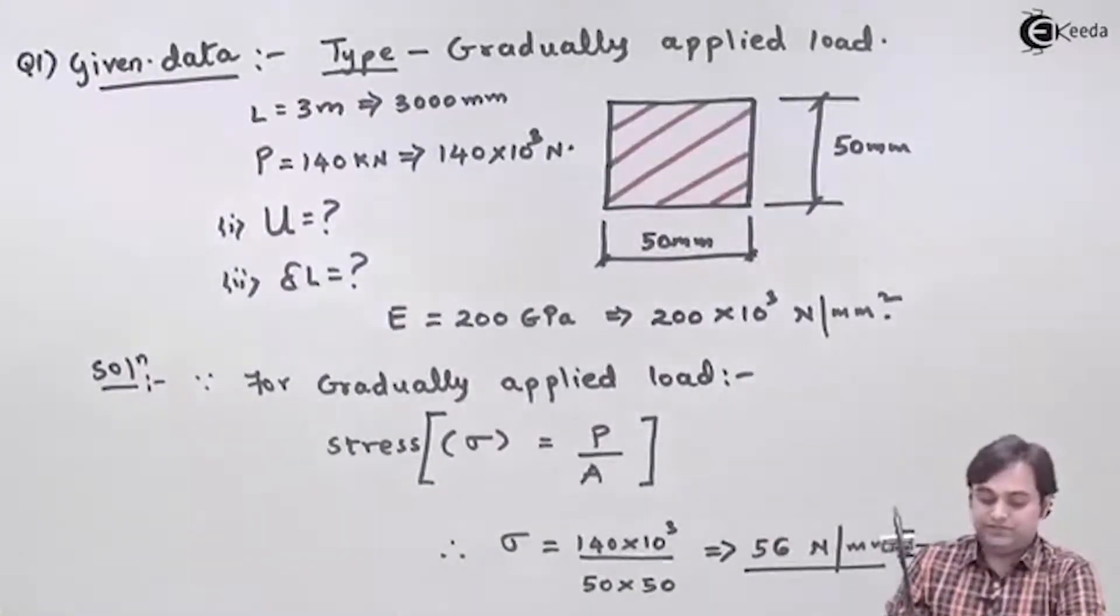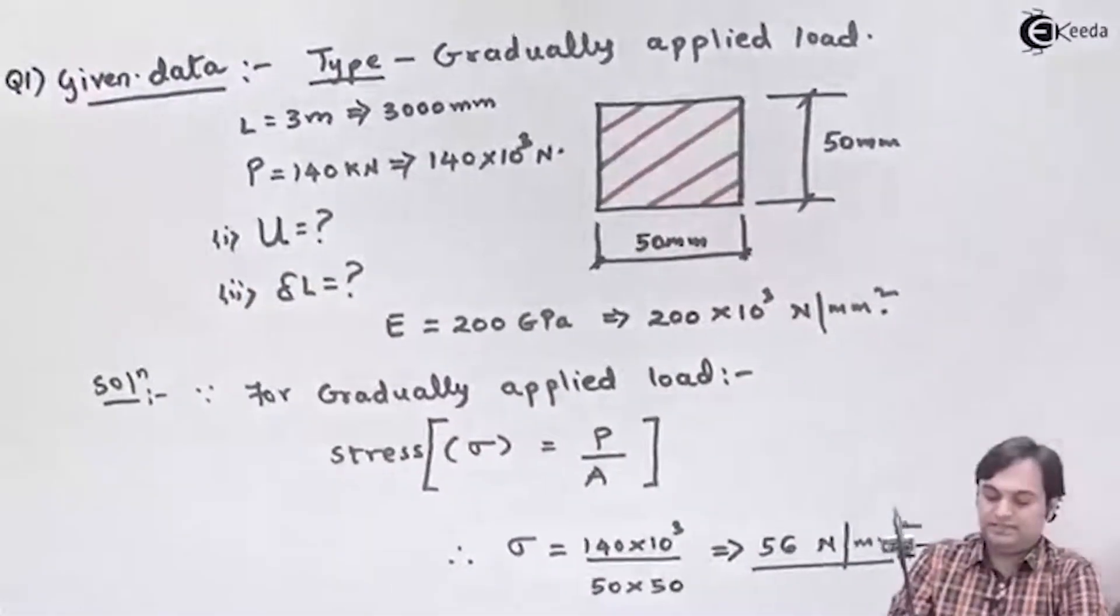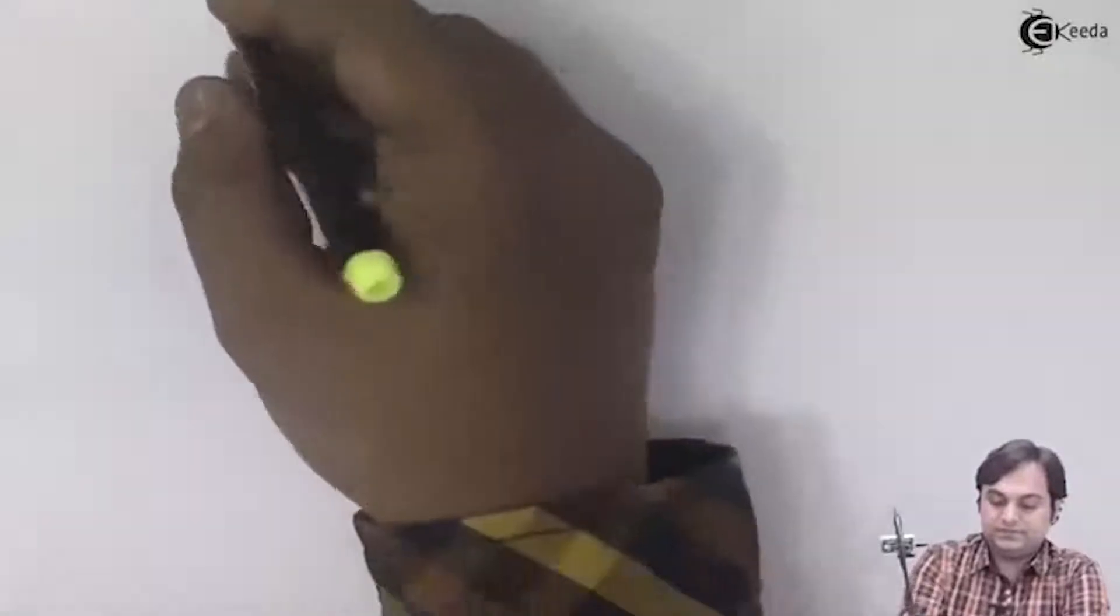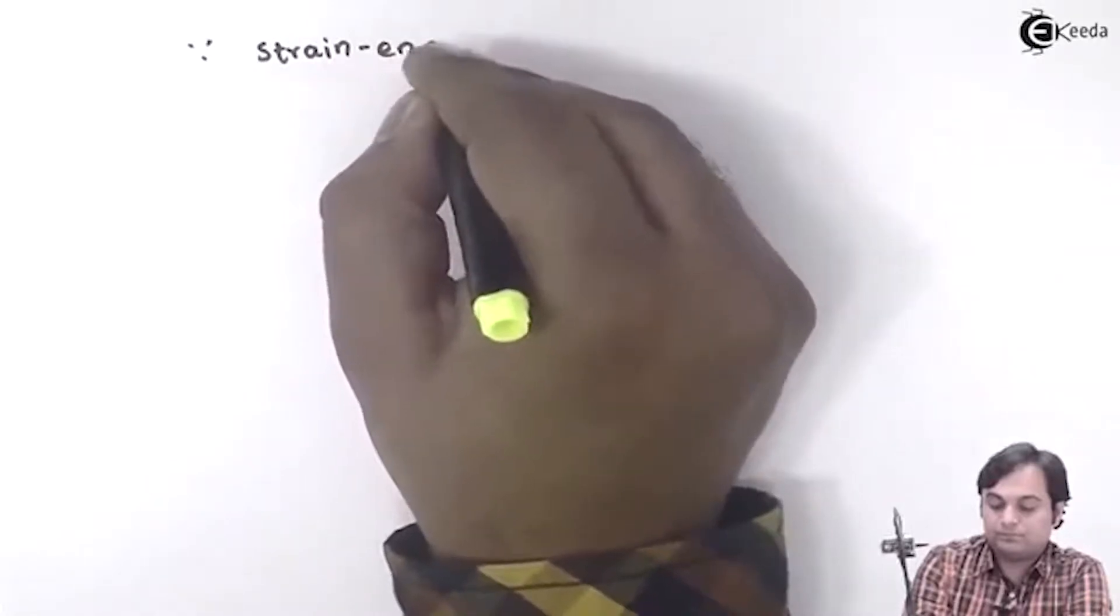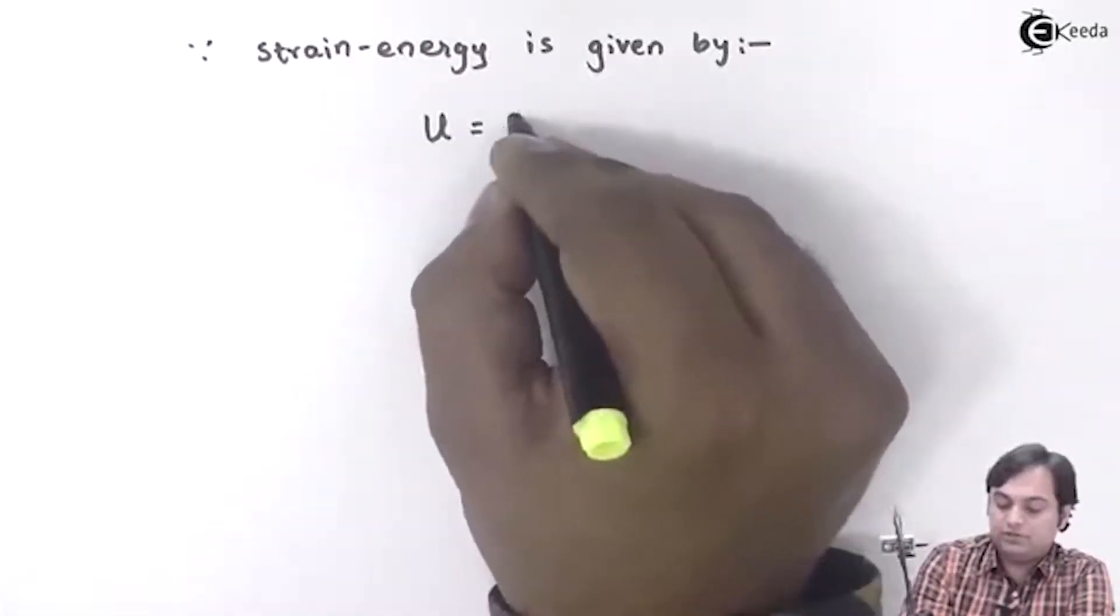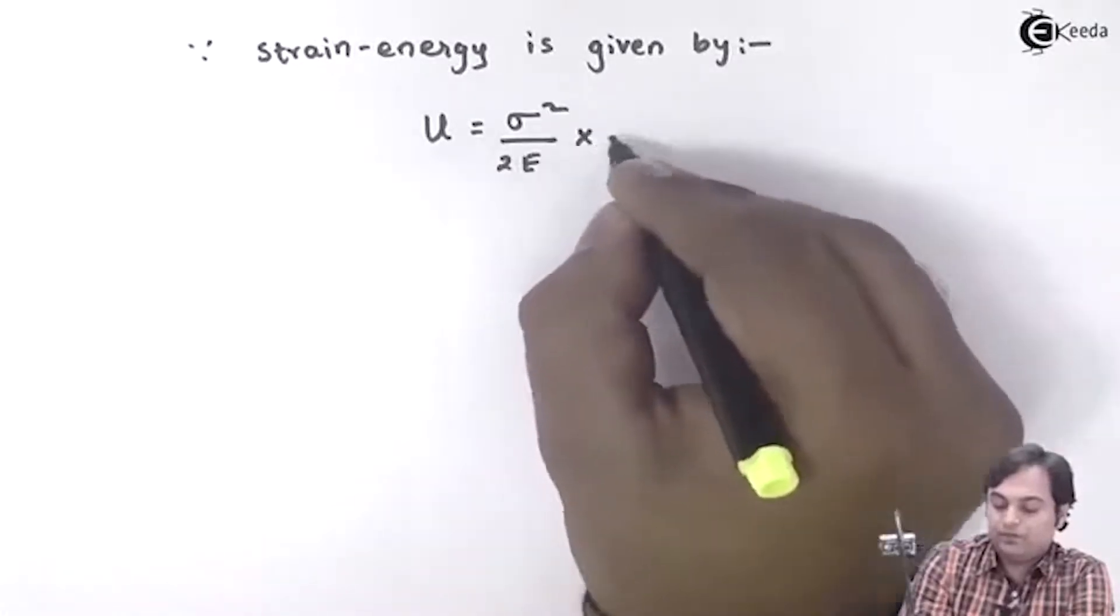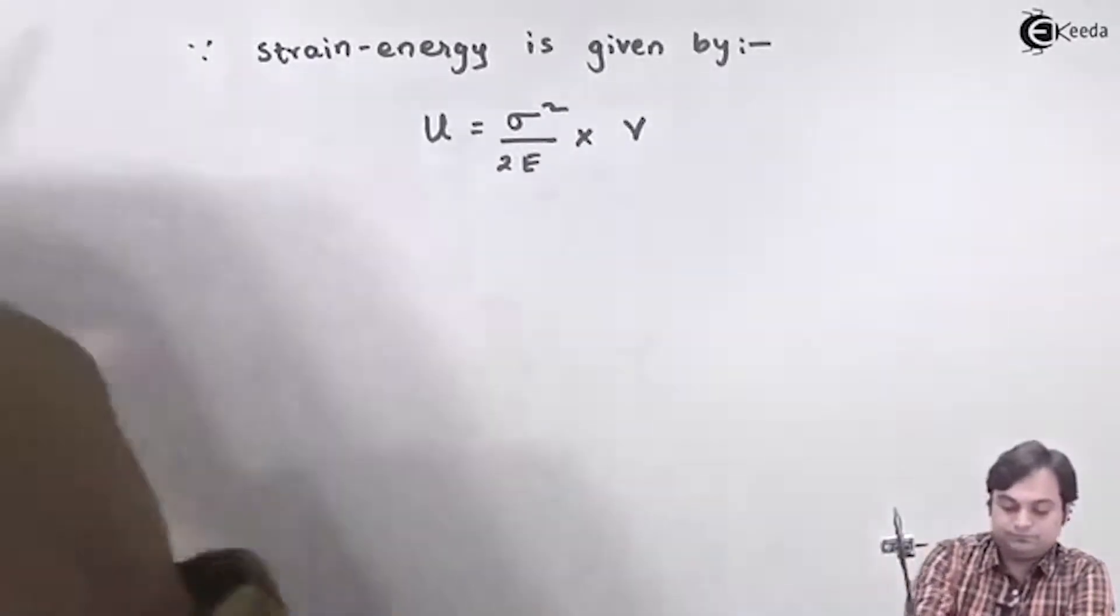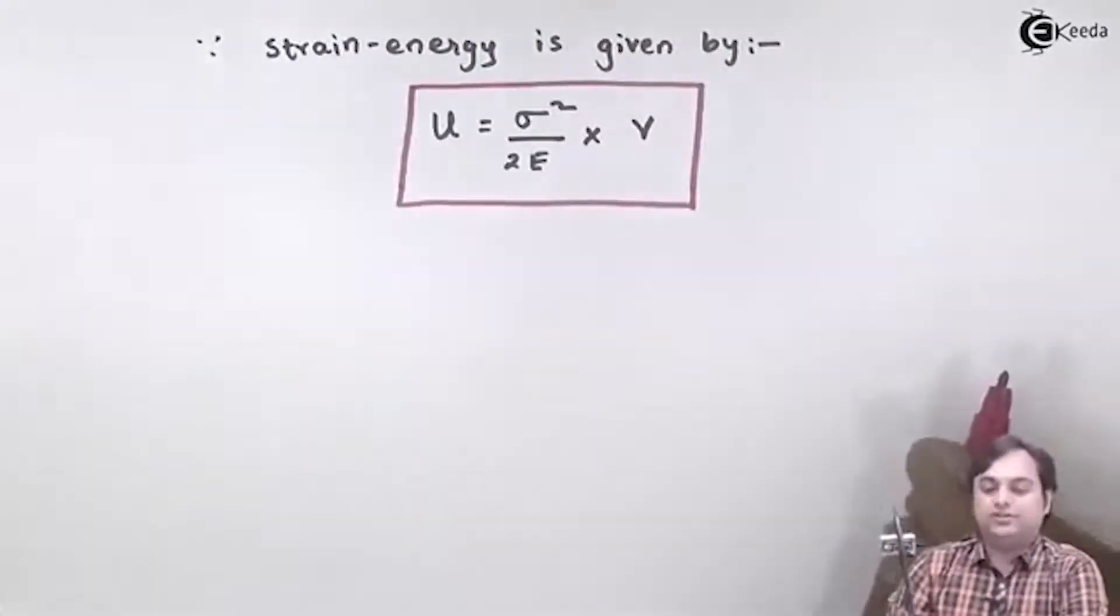So after getting this value of stress, we can easily go for the calculation of strain energy. I'll say that since strain energy is given by capital U equals σ² over 2E multiplied by volume. This is the formula of strain energy.